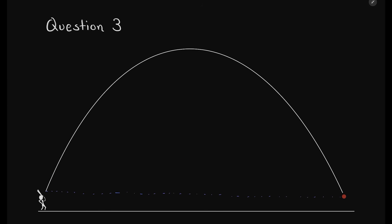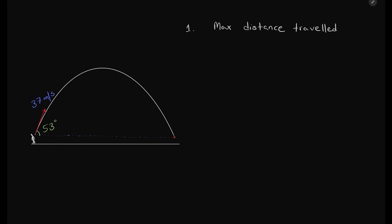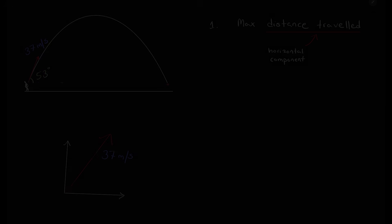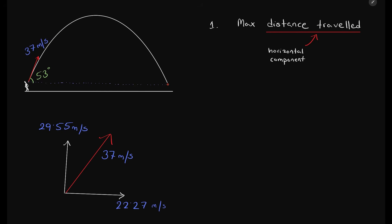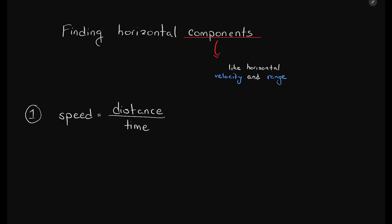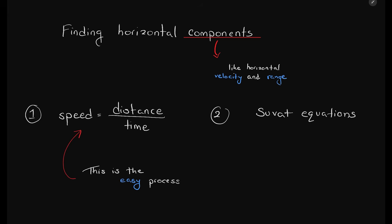Question 3: a ball is thrown at a 53-degree angle at a speed of 37 meters per second. Find the maximum distance traveled and the maximum height reached. When they ask for maximum distance traveled, they are asking for the horizontal distance, so we use the horizontal component. Breaking it into components, the horizontal component is 37 cos 53 and the vertical component is 37 sin 53. We run into a problem — we do not know any other value for the horizontal component except initial horizontal velocity.